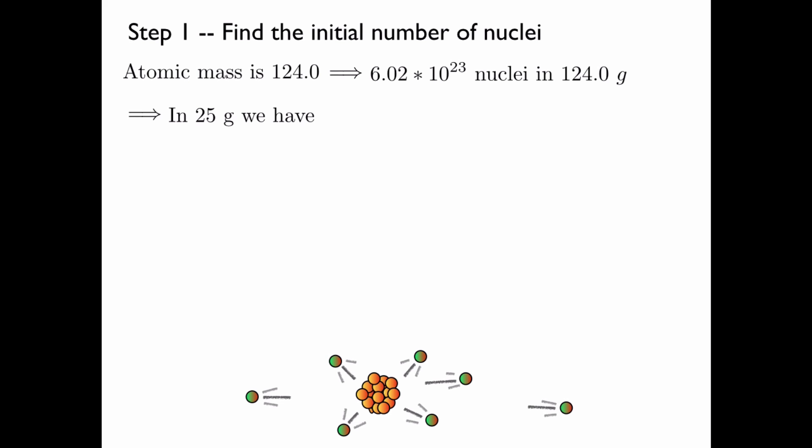However, we have 25 grams, not 124, which means that the number of nuclei we will have will be Avogadro's number times the fraction 25 over 124, because that's the fraction that we have when compared to a whole mole. So this is 1.21 times 10 to the 23 nuclei.